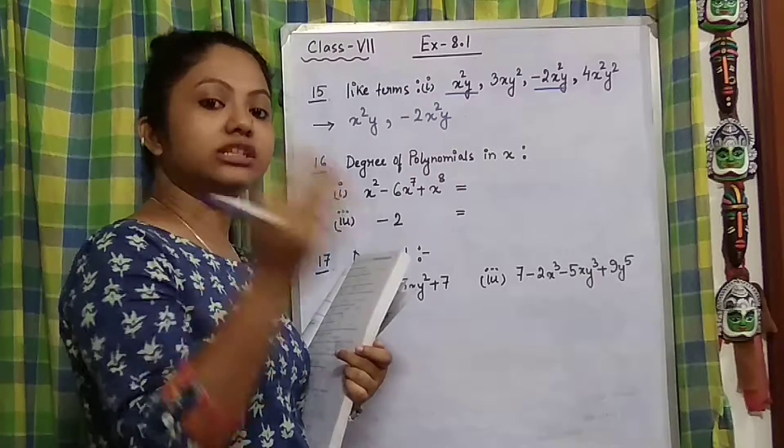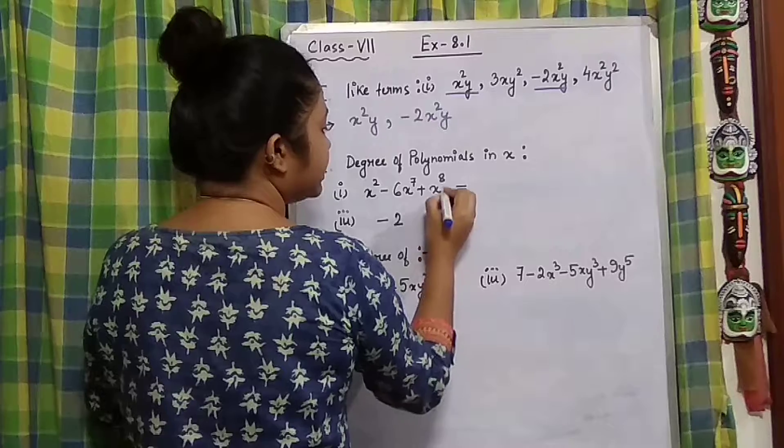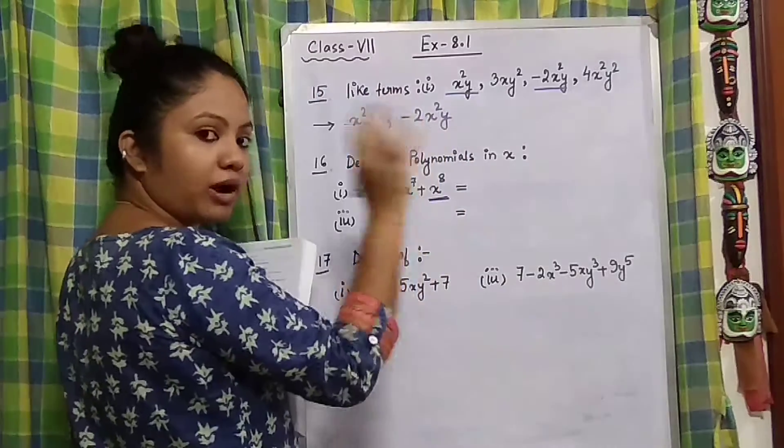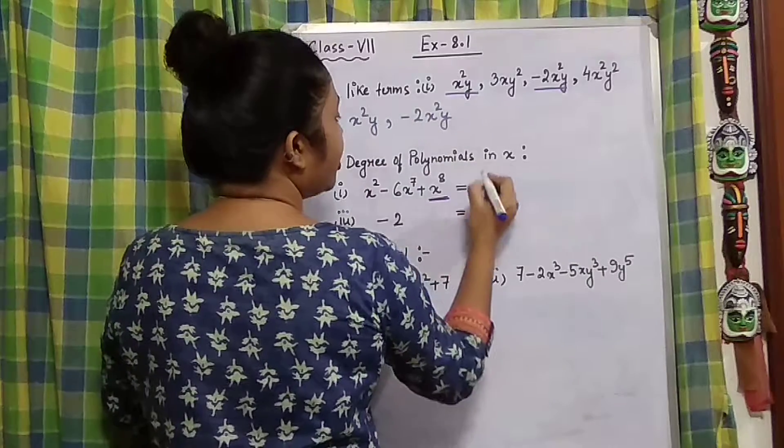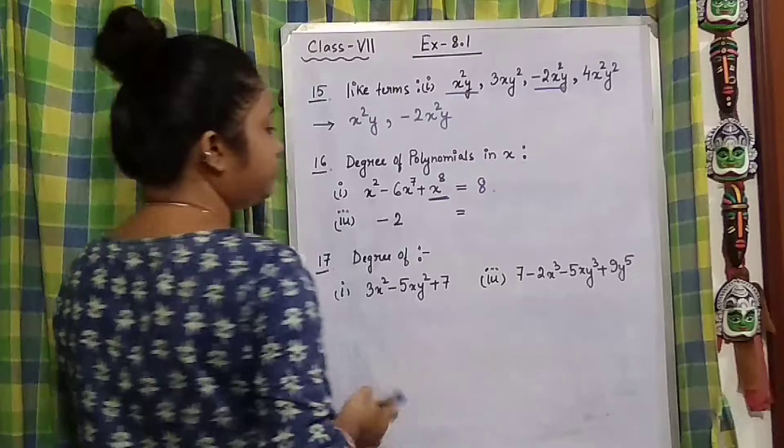Or the highest exponent term. So among all these terms, x⁸ contains the highest power. Therefore, the degree of polynomial in x is 8.